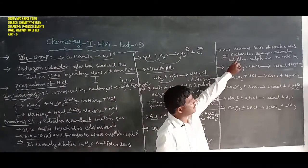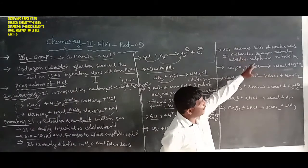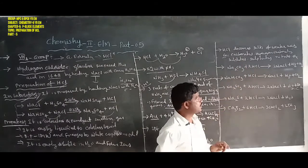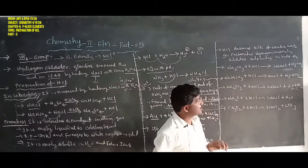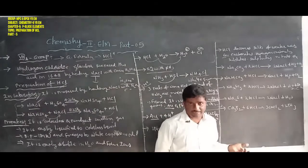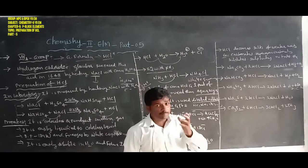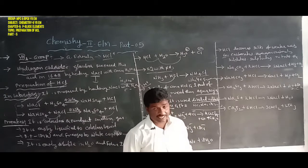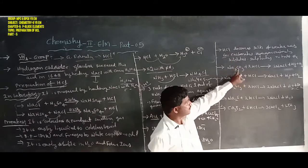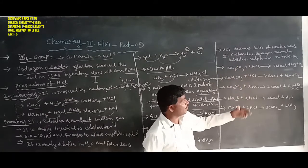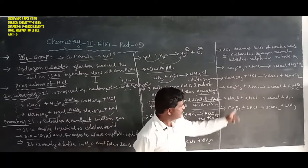Another property: hydrochloric acid decomposes salts of weaker acids, such as carbonates, bicarbonates, sulfides, sulfates, nitrides, and phosphides. For example, sodium carbonate, sodium bicarbonate, sodium sulfide, sodium sulfate, and calcium phosphide are all salts of weaker acids that hydrochloric acid can decompose.